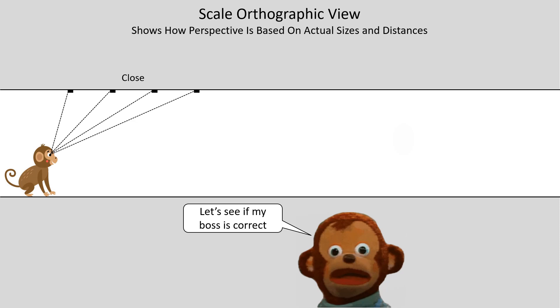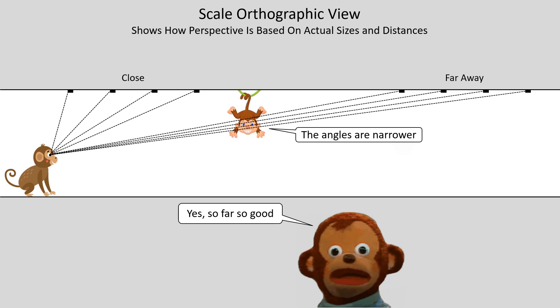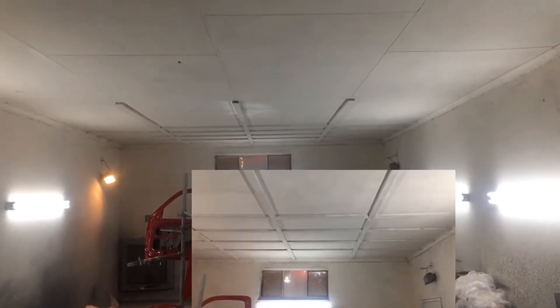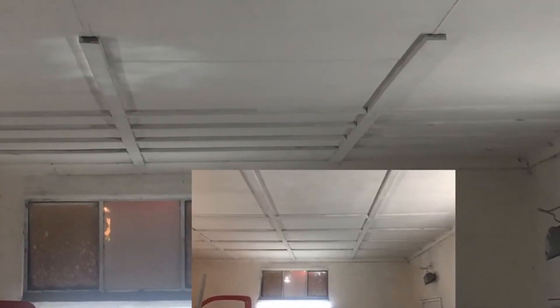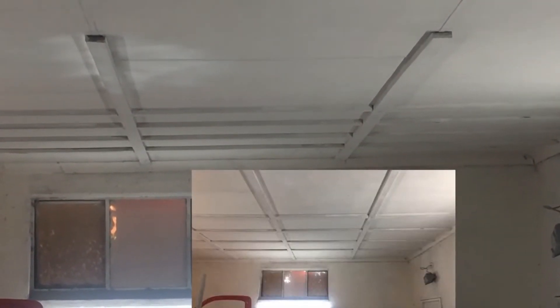Well, since perspective is based on the actual sizes and distances of objects, I'm going to use the scale orthographic view to see if what FlatSide says is correct. And this definitely shows that the angles to the four rectangles on the right are definitely narrower. Does it change the physical height of those bars? No. This is the scale orthographic view — it just changes the apparent angular altitude based on the observer's angle, because perspective.